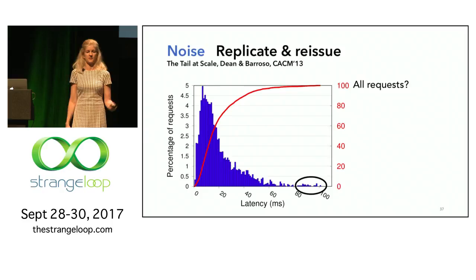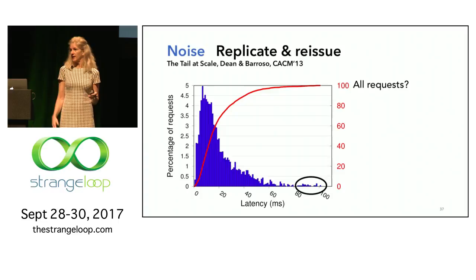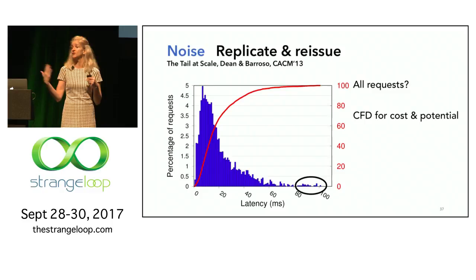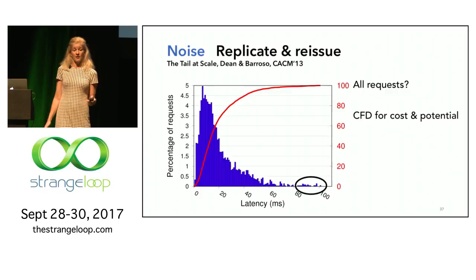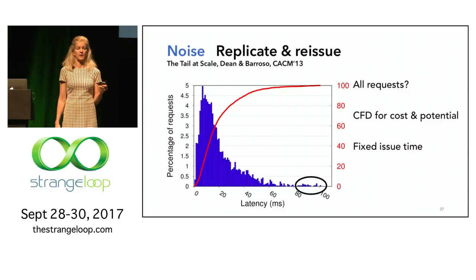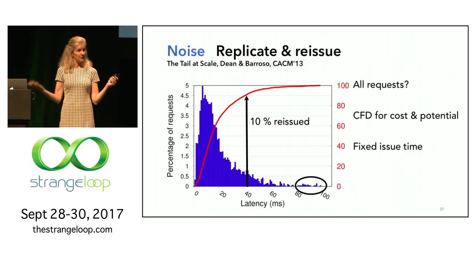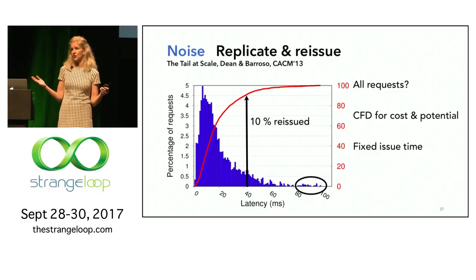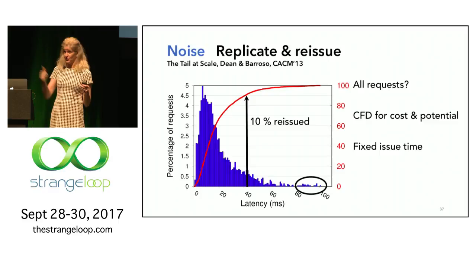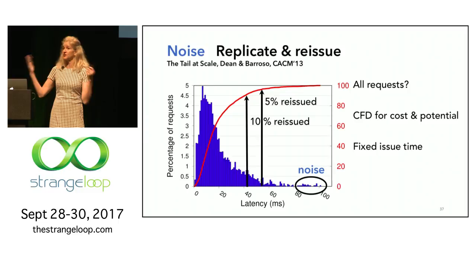We'll talk about techniques for noise and random events first, then techniques that address work in the tail. The insight is that long requests reveal themselves, so we can do something specially about them regardless of cause. If the cause is noise, we can replicate and reissue. The basic system architecture already has replication, so if one server's slow, probably another one isn't — unless you're overloaded. You can use the CDF to tell you both the cost and the potential for reissuing. A fixed reissue time with a 10% budget is the prior state of the art, but it's not perfect if the reason you're slow is overload.